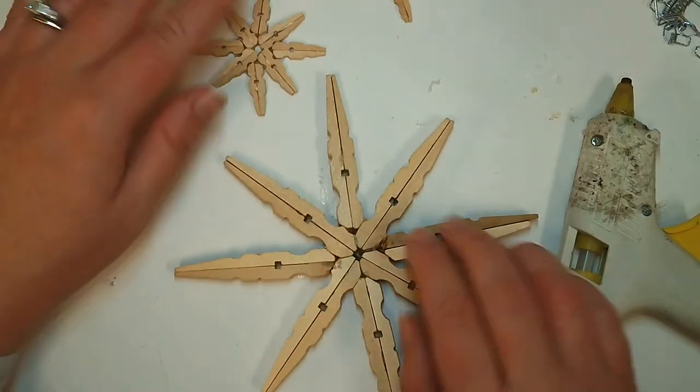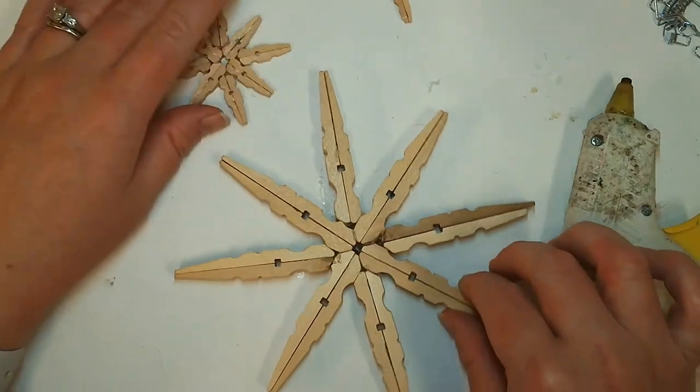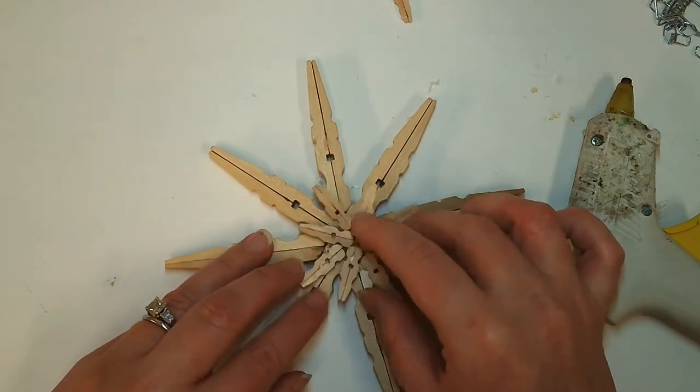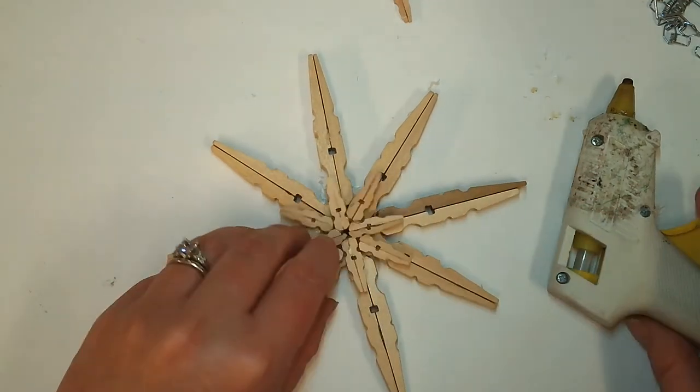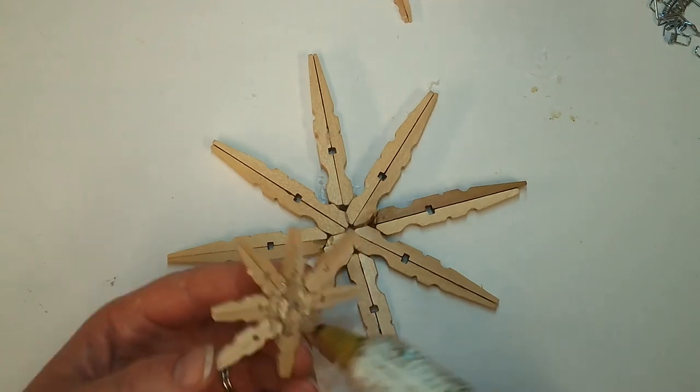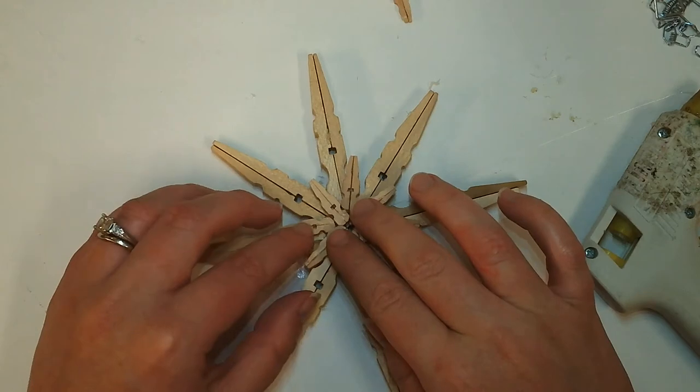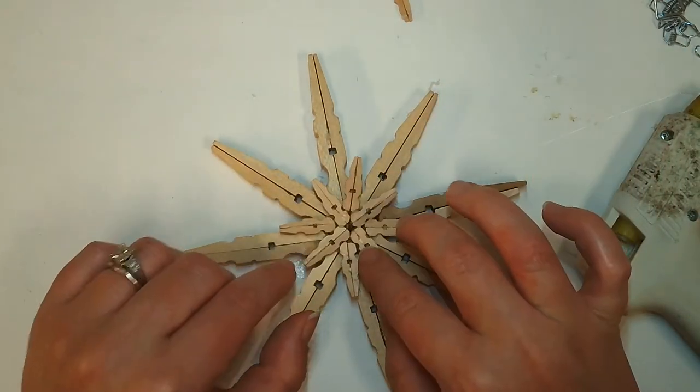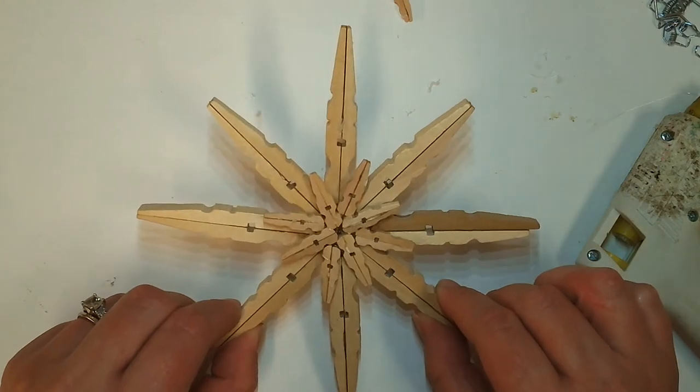All right, once both of your spokes are dry, we're going to go ahead and layer them one on top of the other to create a nice 3D effect on your snowflake. So go ahead and just don't be shy with the glue on this one and glue it in place and you can either have the spokes overlap or have them kind of over the edges like I've chosen here.